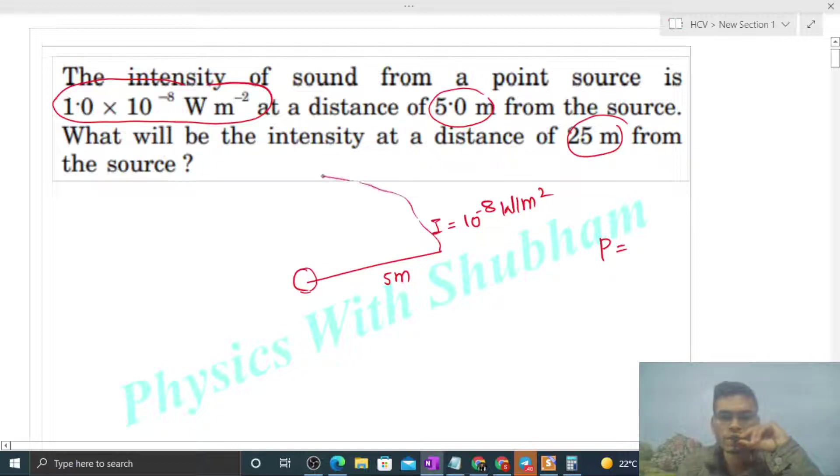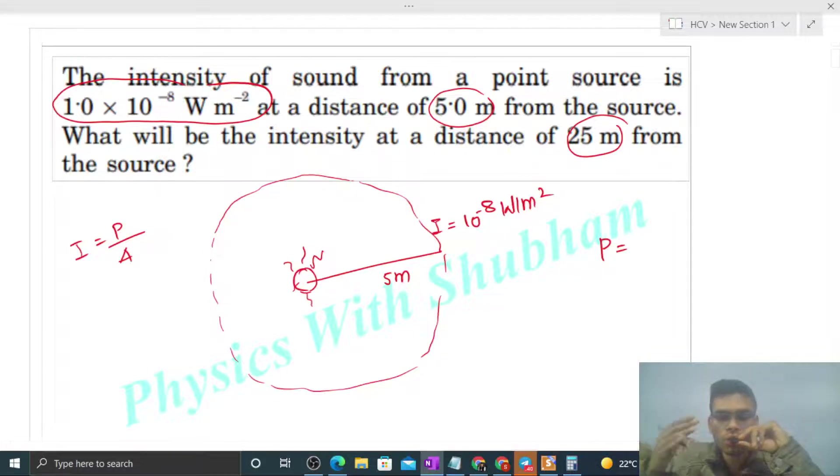Because you can see, we can draw a sphere like this. And intensity is nothing but power divided by area. One thing that you have to assume is that this sound is uniformly distributed in every direction, kind of isotropic. Otherwise you cannot solve this problem. You have to assume isotropic condition, that this power will be uniformly distributed over the surface area of this sphere.